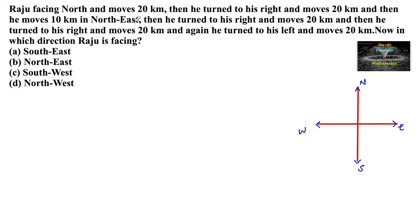Raju is facing north and moves 20 km, then he turned to his right and moves 20 km, then he moves 10 km in the north-east direction, then he turned to his right and moves 20 km, then he turned to his right and moves 20 km, and again he turned to his left and moves 20 km. Now, in which direction is Raju facing?